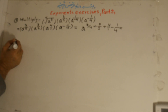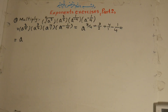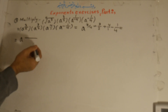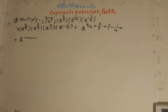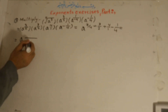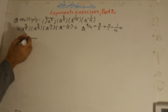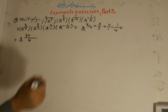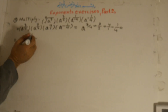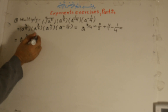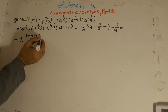We add all of these powers. The common denominator is 4, because 4 is divisible by 2 and 1. So: 4 divided by 4 is 1, 1 times 3 is 3. Plus: 4 divided by 2 is 2, 2 times 3 is 6. Plus: 4 divided by 1 is 4, 4 times 4 is 16. Minus: 4 divided by 4 is 1, 1 times 1 is 1.